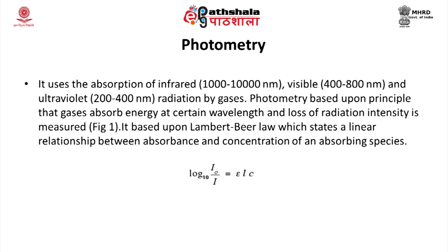Photometry uses the absorption of infrared radiation (1000–10,000 nm range), visible radiation (400–800 nm), and ultraviolet radiation (200–400 nm) by gases. Photometry is based on the principle that gases absorb energy at certain wavelengths and the loss of radiation intensity is measured. It is based upon the Beer-Lambert law, which states a linear relationship between the absorbance and the concentration of the absorbing species.